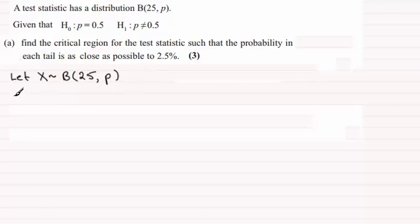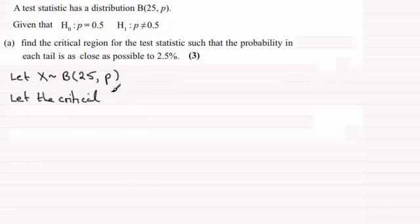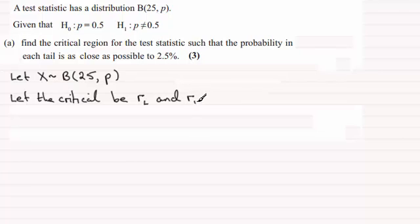I'm going to let the critical regions be called R. Because we've got two critical regions here, there's going to be a lower critical region — I'll call it R with subscript L — and an upper critical region — I'll call it R subscript U.